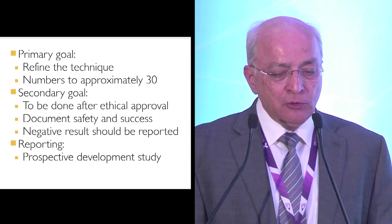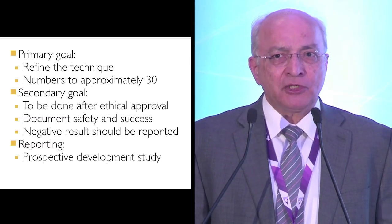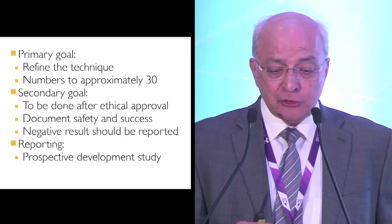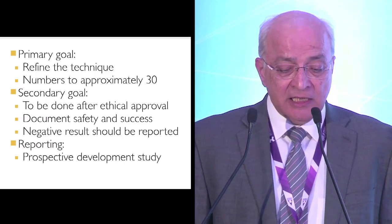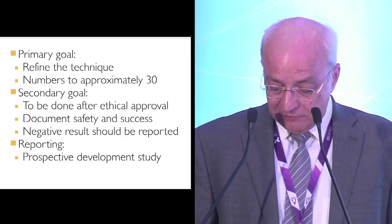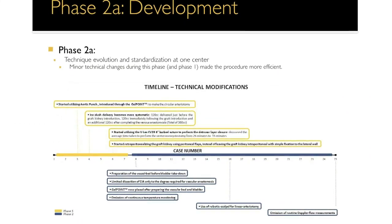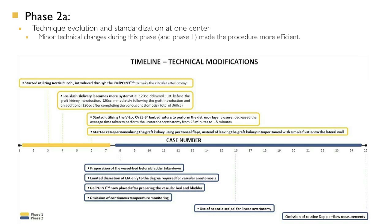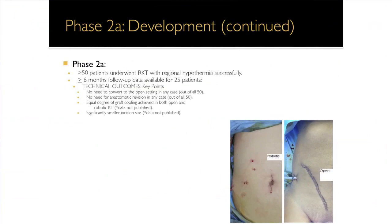In the development phase, the primary goal is to refine the technique, targeting approximately 30 cases as recommended by the IDEAL collaboration. Secondary goals include ethical approval, documenting safety, reporting successes and negative results, using a prospective development study format. We published the timeline of how the procedure evolved — for example, switching from scissors to a punch, making a peritoneal flap instead of just fixing the kidney with fat, and switching from Vicryl to quill barbed suture for bladder closure.